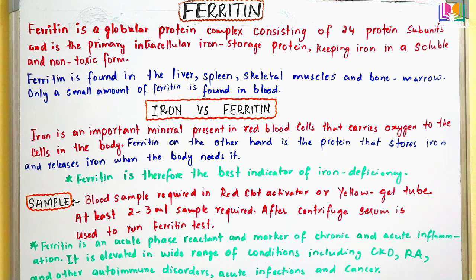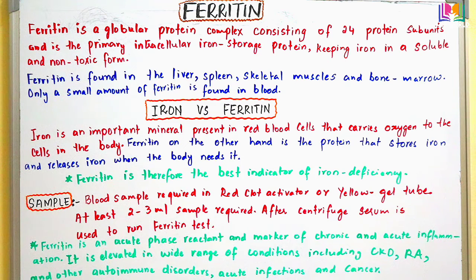We must check ferritin first, because ferritin is a blood protein that stores iron and is a good indicator of how much iron is present in the body. The amount of ferritin in the blood reflects the total amount of iron available to the body for future use. In iron deficiency anemia, we check ferritin first — if there is enough ferritin we then check iron, but if ferritin is not enough, we start treatment directly to normalize ferritin levels.